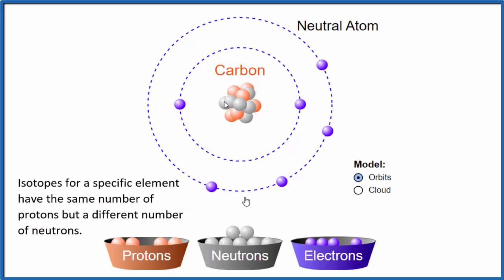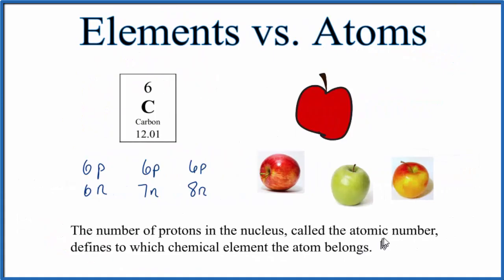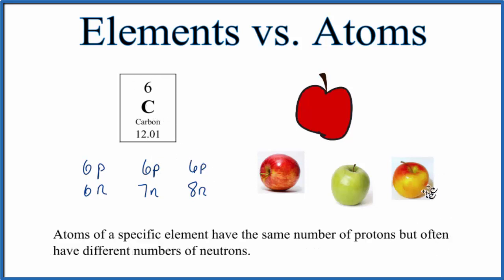So let's talk a bit about definitions. The number of protons in the nucleus, the atomic number, that defines the chemical element that this atom belongs to. So if you see six here, it's going to be carbon. Each one of these varieties has six protons - that makes it carbon.